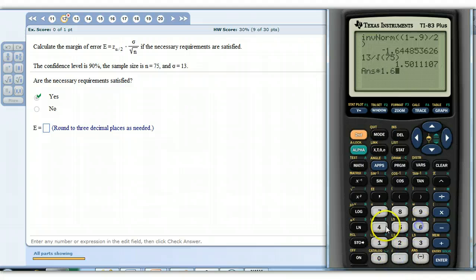So 1.645 to 3 decimal places. So there's our number 2.4693 to 3 decimal places. The next number is 3 here. So 2.469.